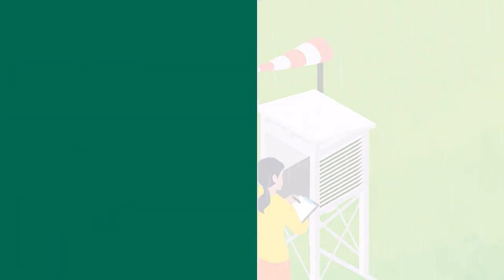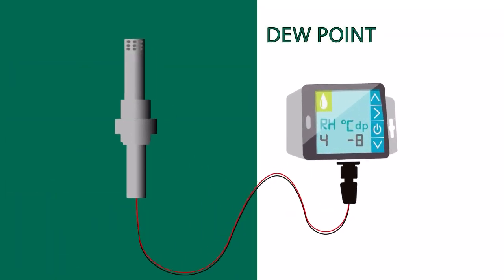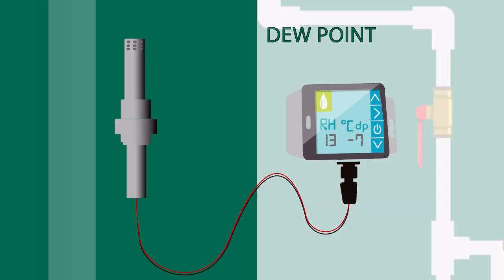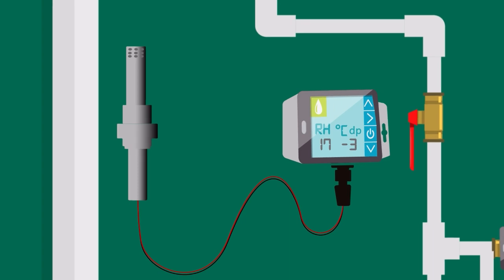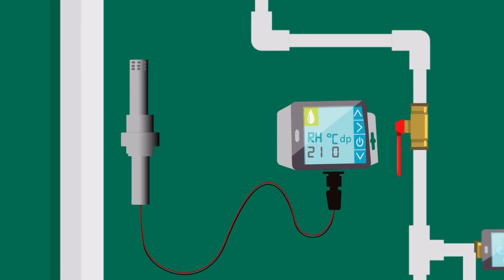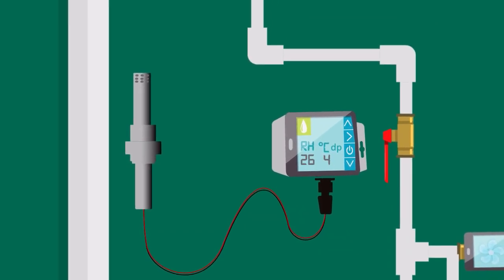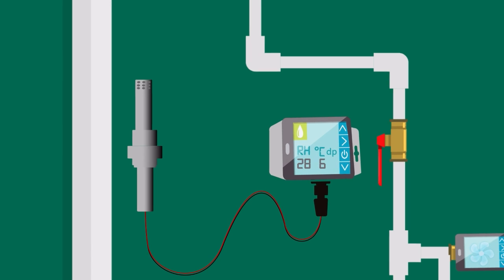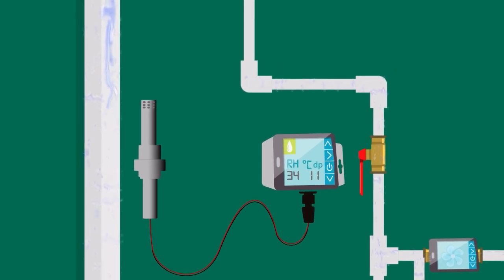Dew point. Dew point is used to tell the amount of water in the air related to one of the most common humidity problems we have: condensation. If you have a surface in a room with a colder temperature than the air's dew point, you will have condensation on that surface.